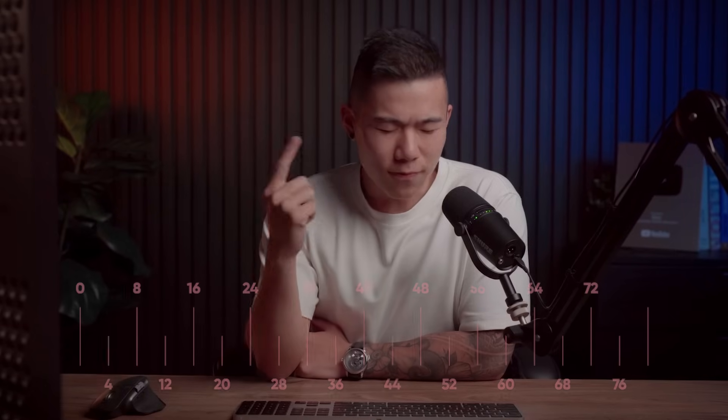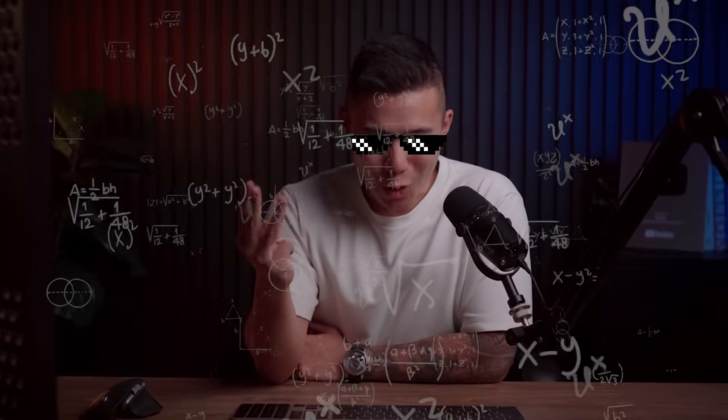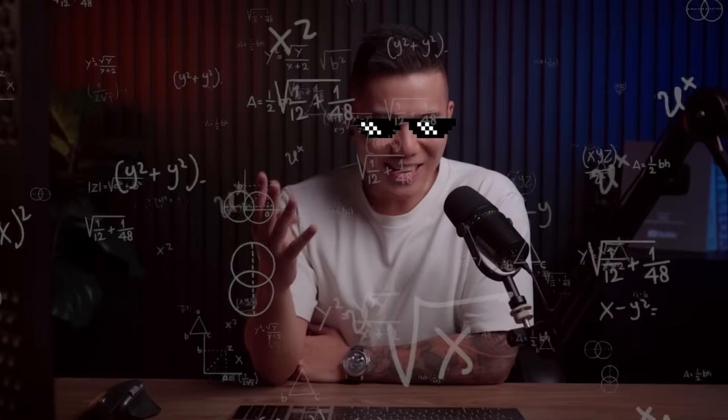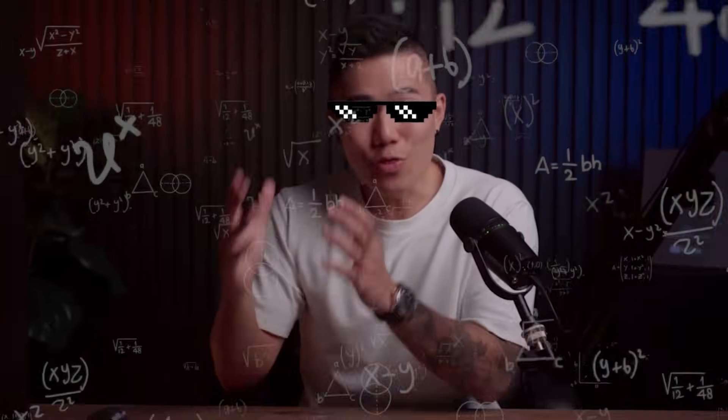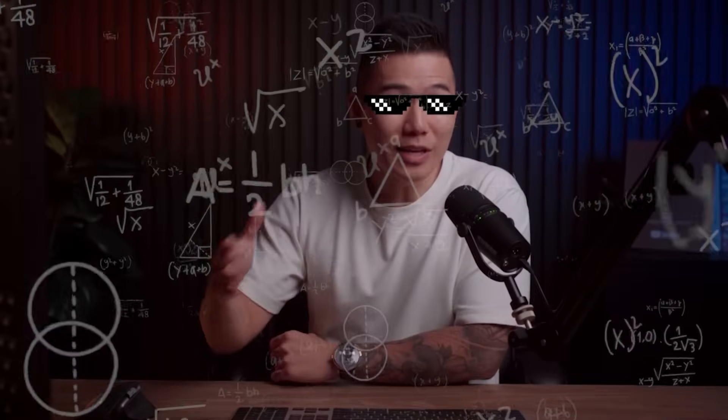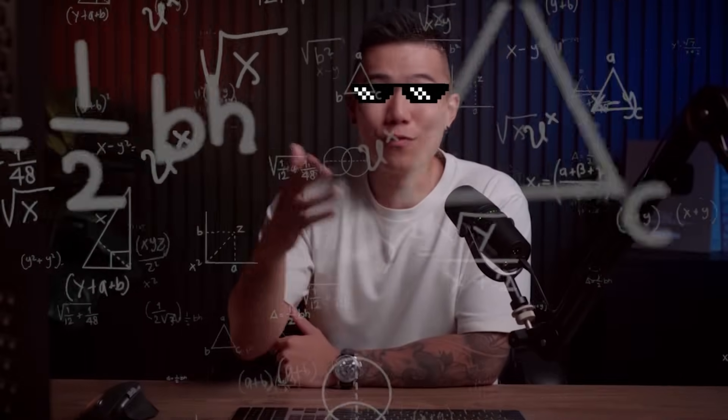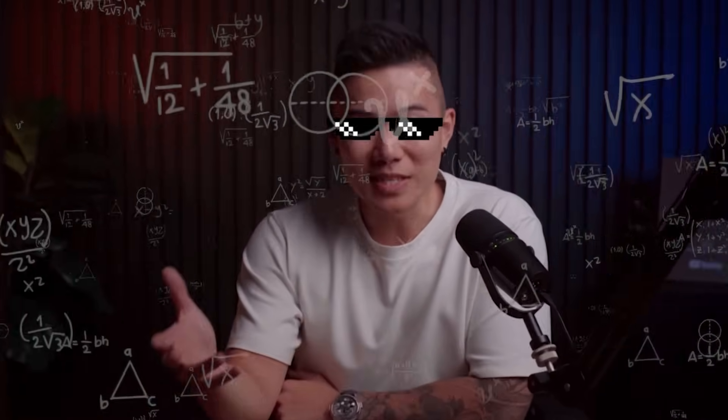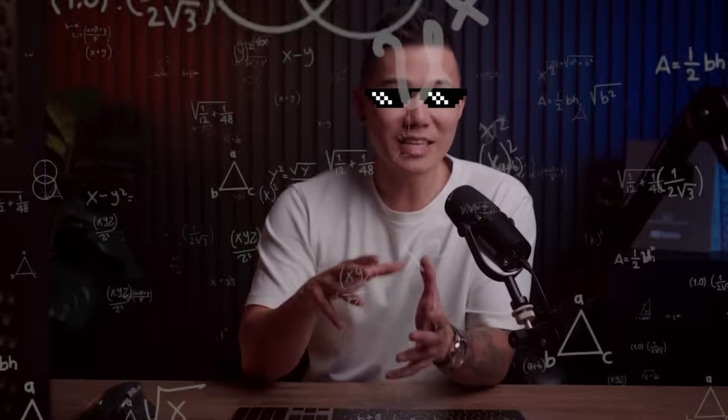It's either going to be 4, 8, 12, 16, 20, 24, 28, 32, 36, 40, 44, 48, 52, 56, 60 — just increments of four. It's that simple.